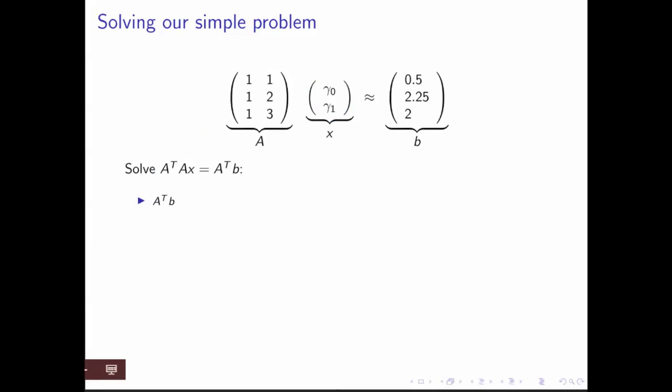So we can form A transpose B. That's a matter of taking our matrix in our right-hand side, transposing the matrix, multiplying it times the right-hand side. And if you work it out, you get this vector with two components.